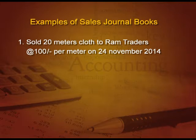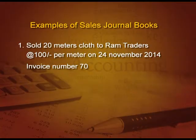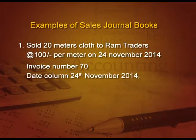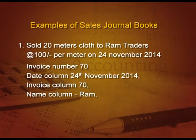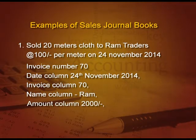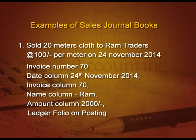Let us take a few examples of sales journal. Books of Raja Limited. First transaction: sold 20 meters of cloth to Ram Traders at the rate of 100 per meter on 24th November 2014, with invoice number 70. This will be recorded as follows: date column — 24th November 2014, invoice column — 70, name of customer — Ram, amount column — 2000 rupees, that is 20 meters into 100. Ledger folio will be filled after posting to the Ram account.